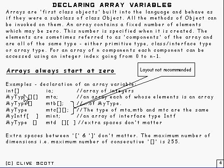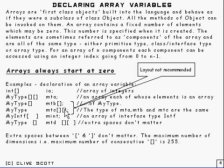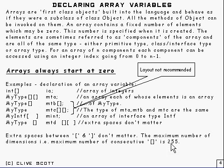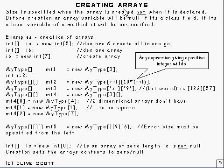Next, we talked about declaring array variables. Arrays always start at zero — that's an important thing to note. In Java, if you want two-dimensional arrays, you use arrays of arrays. The brackets can go on either side by convention they normally go on the left, and you can have up to 255 dimensions, though that's not much use at that level.